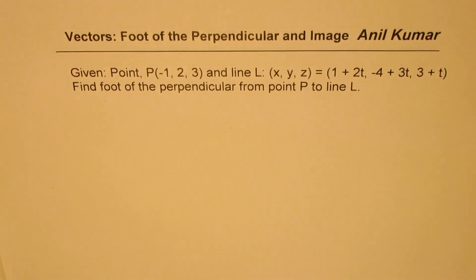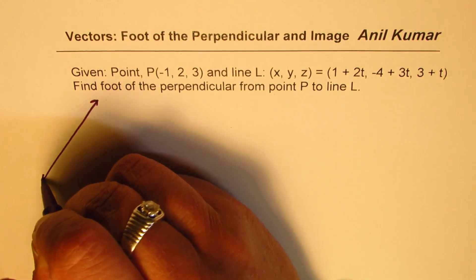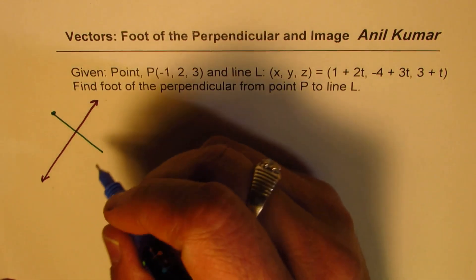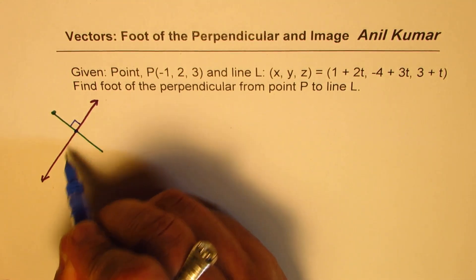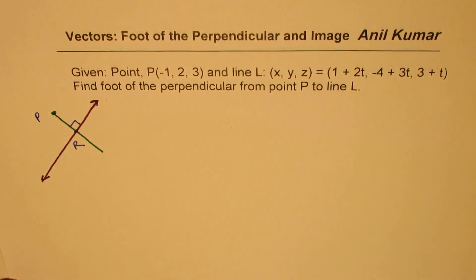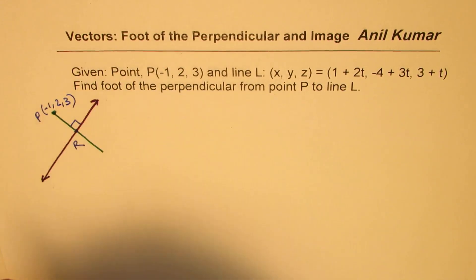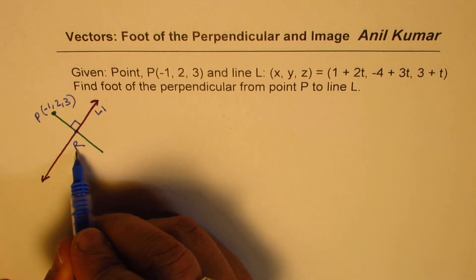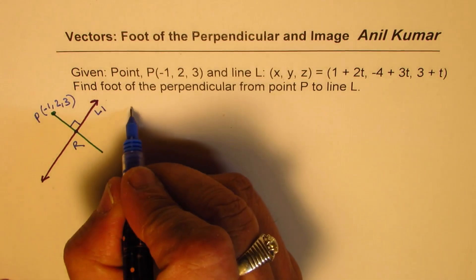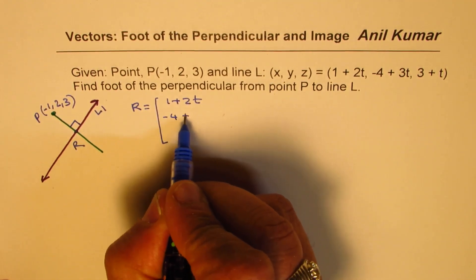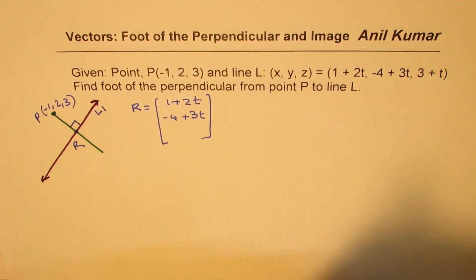Let me sketch the line once again. We have a point P, and from point P we are drawing a perpendicular. Let this point of intersection be point R — the foot of the perpendicular from external point P(-1, 2, 3). To calculate the foot of the perpendicular, we assume the coordinates of point R as given by the equation of the line: (1+2t, -4+3t, 3+t).